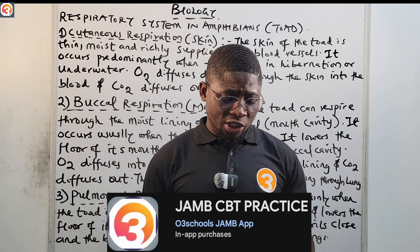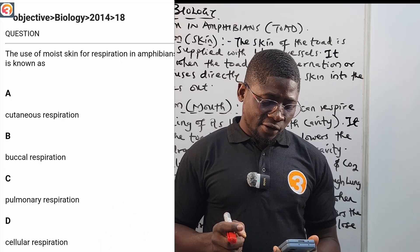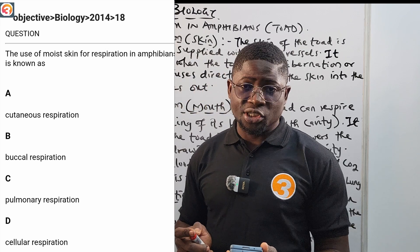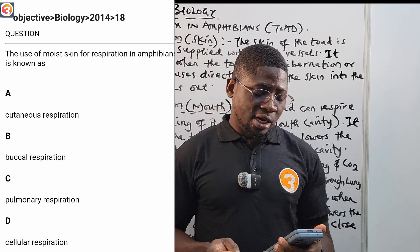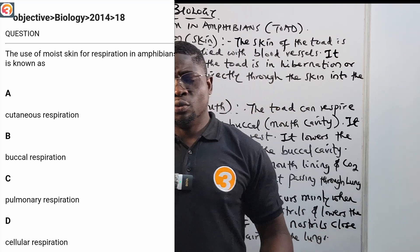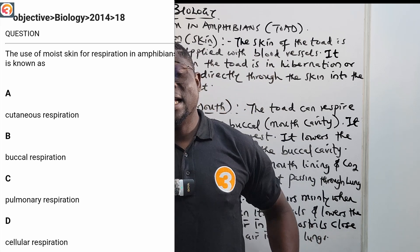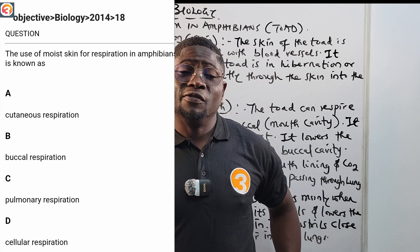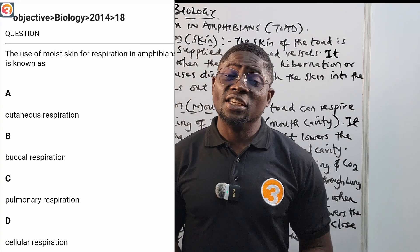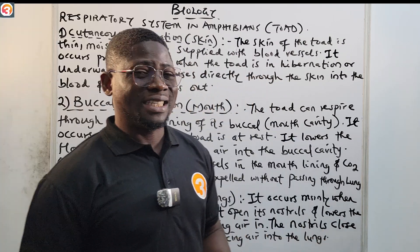Here's a JAMB past question from 2014, question number 18: 'The use of moist skin for respiration in amphibians is known as: A) Continuous respiration, B) Buccal respiration, C) Pulmonary respiration, D) Cellular respiration.' We'll come back to this at the end of class, because at O3 Schools we give you value first — teach you first, then answering questions will be easy.